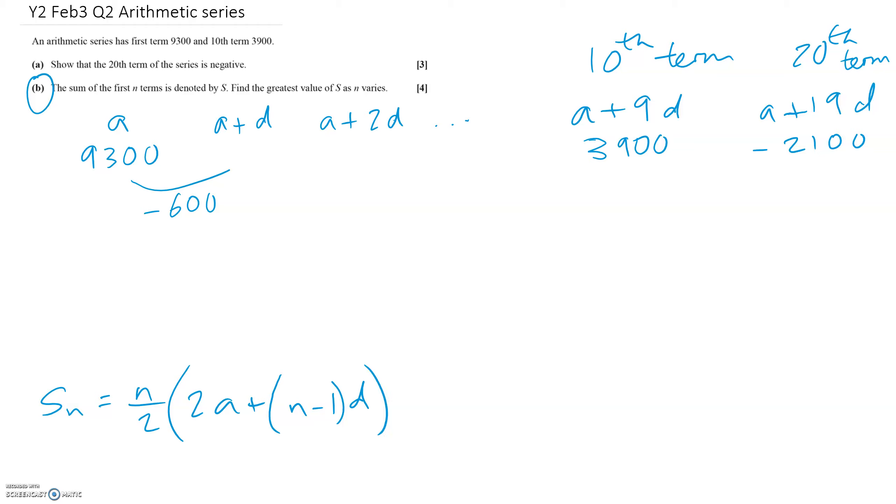But this question is asking for the greatest value of s. In other words, when we start adding up these terms, in part a we realized that the common difference was minus 600. So the terms are going to go like this: 9300, 8700, 8100, and so on. They're going to keep going, and then at some point, they're going to turn negative. At some point between the tenth term and the twentieth term.